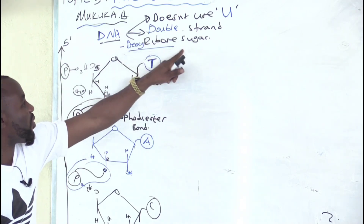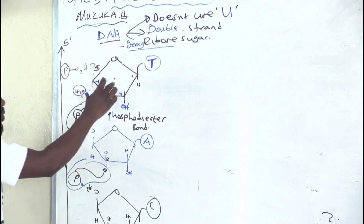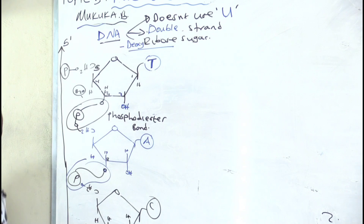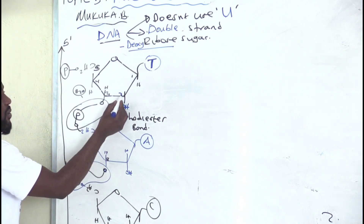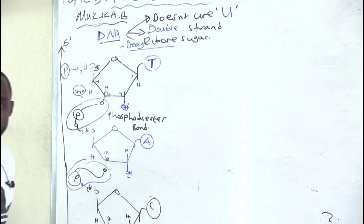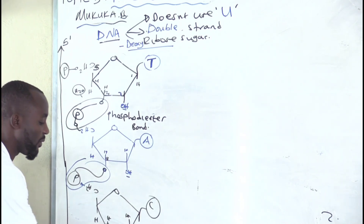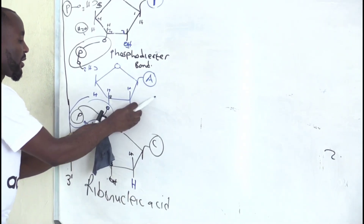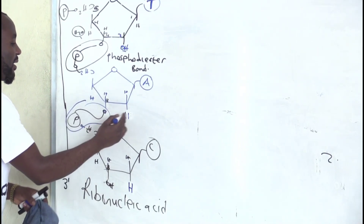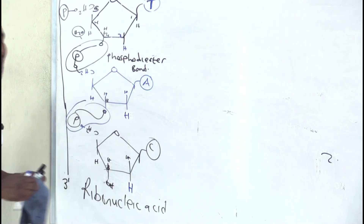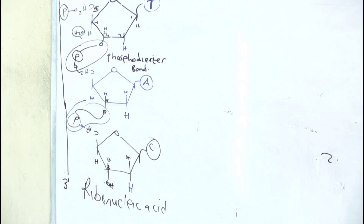What about deoxyribose sugar? What you are seeing here is a ribose sugar used to make RNA — why? Because on carbon number two there is OH. So what we do is remove OH and put H everywhere. When we do that, now we have a deoxyribose sugar.